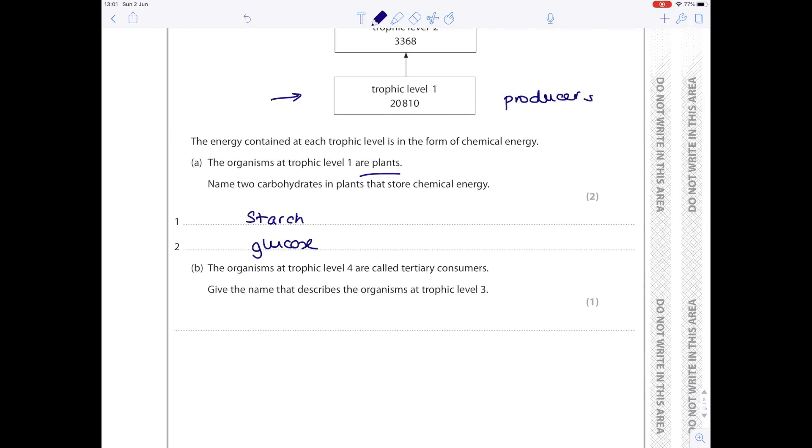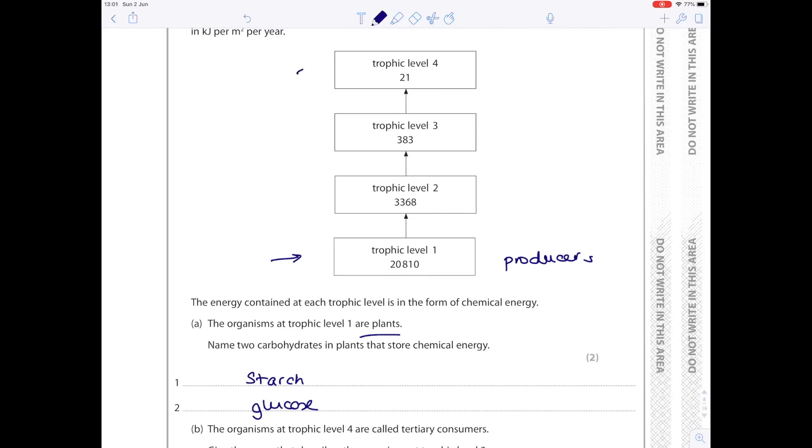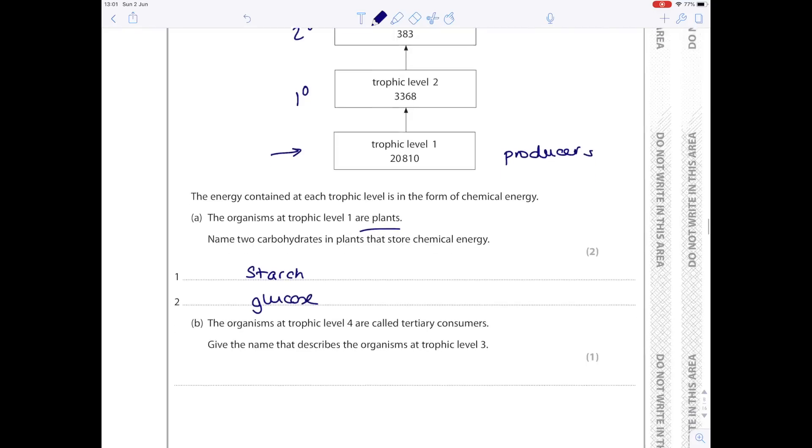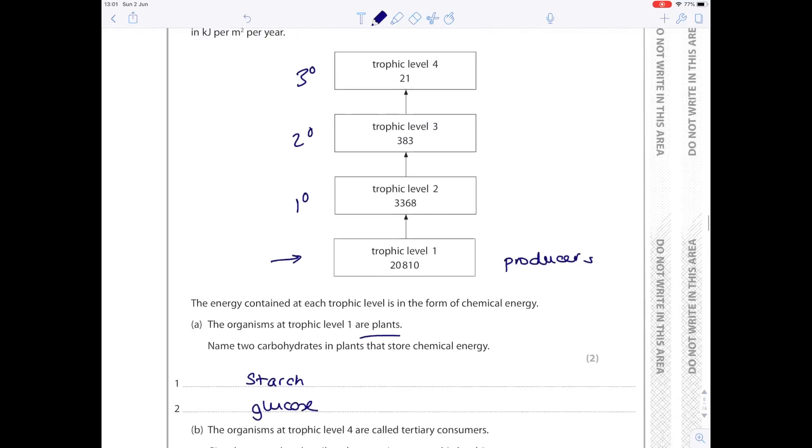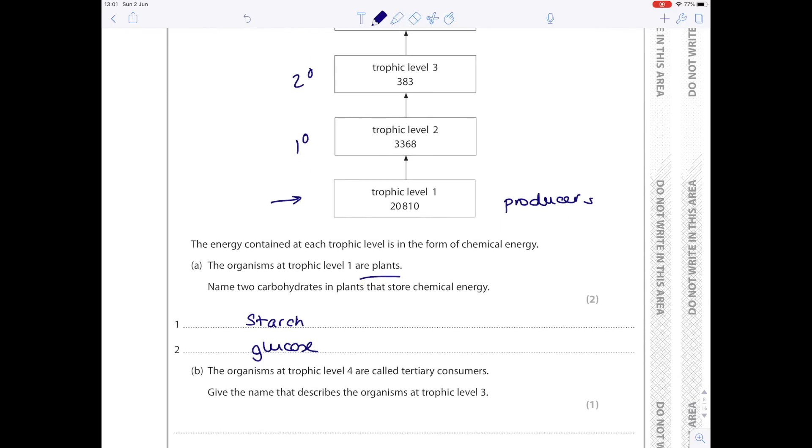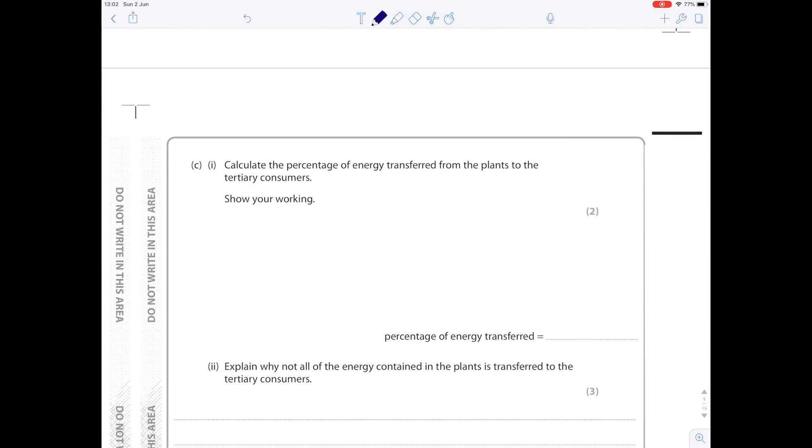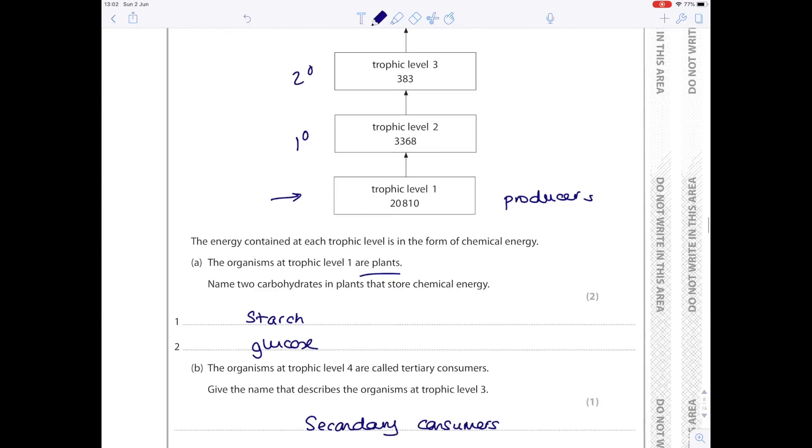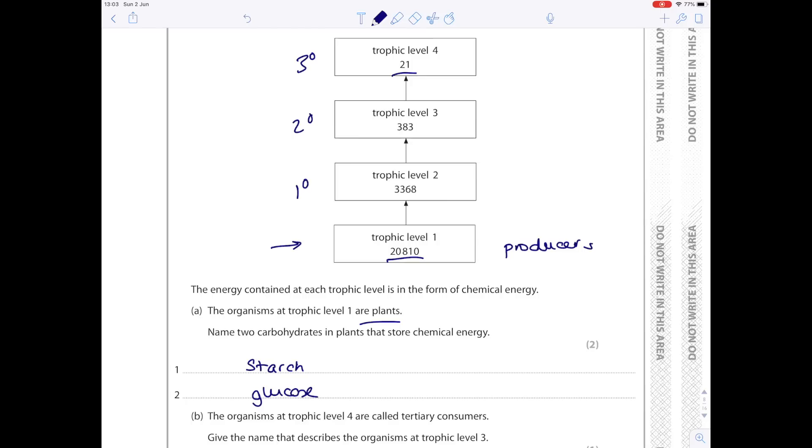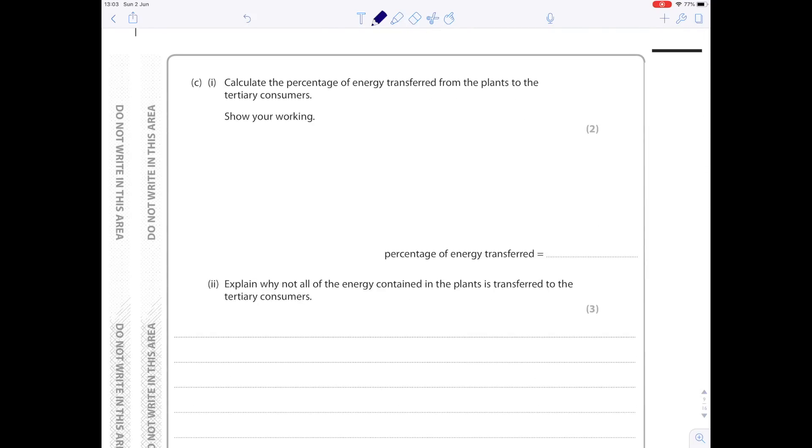The organisms at trophic level four are called tertiary consumers. Give the name that describes the organisms at trophic level three. So I've already labeled that. They would be the secondary consumers. Calculate the percentage of energy transferred from the plants to the tertiary consumers. Show your working. So we're looking at the energy transfer from the producers, trophic level one, to trophic level four. So we want to do 21, which was trophic level four's energy, over the producers, which was 20,810, multiplied by 100. And we can see a very small amount. Only 0.1% of energy is transferred.